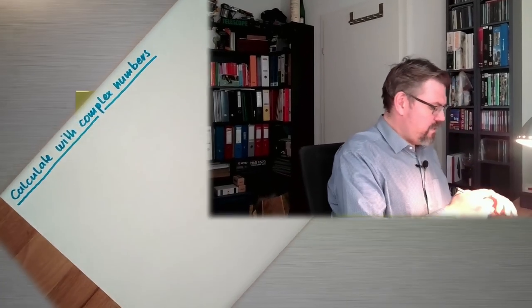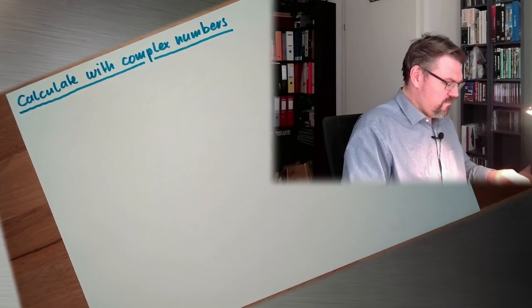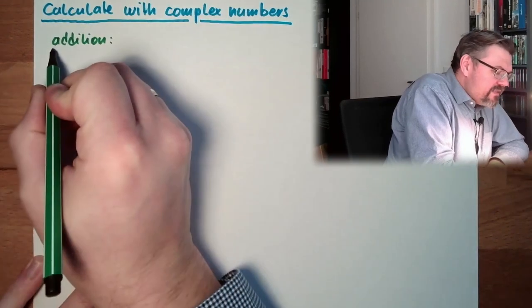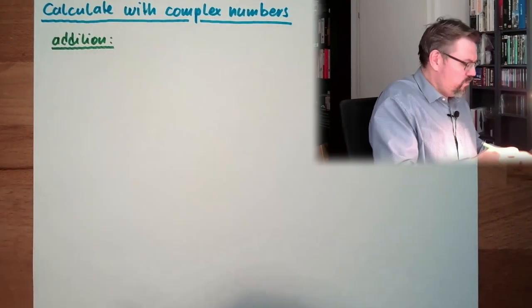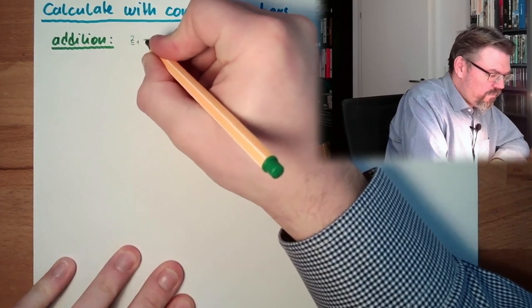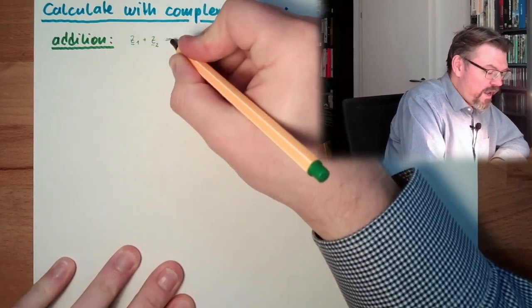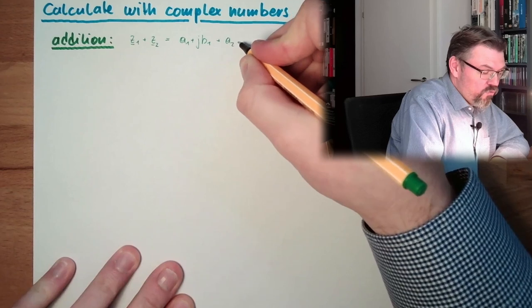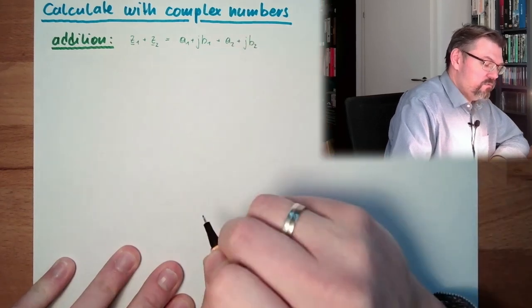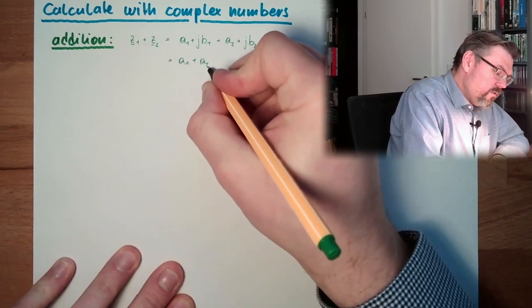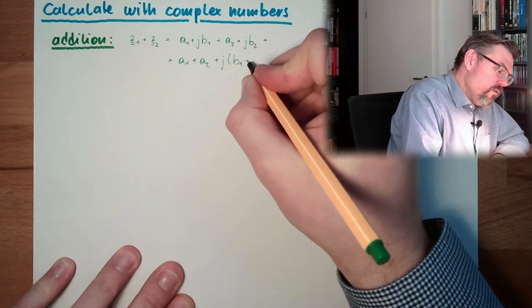Let's start in grammar school with addition. To make the sum of two complex numbers z1 plus z2, we have a1 plus jb1, that's z1, plus a2 plus jb2. And that's actually a1 plus a2, plus j times b1 plus b2.